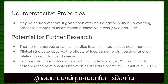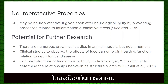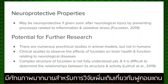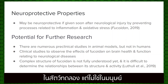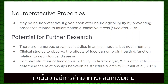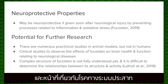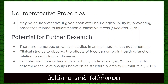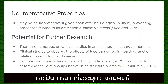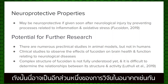Fucoidan also has neuroprotective properties if administered soon after neurological injury by preventing inflammation and oxidative stress. There is plenty of potential for further research with Fucoidan. There are numerous pre-clinical studies in animal models but not in humans, so there could be more clinical studies to observe the effects of Fucoidan on brain health and function relating to neurological diseases. Also, the complex structure of Fucoidan is not fully understood yet, and it is difficult to determine the relationships between its structure and activity, so this could be another area of future research.